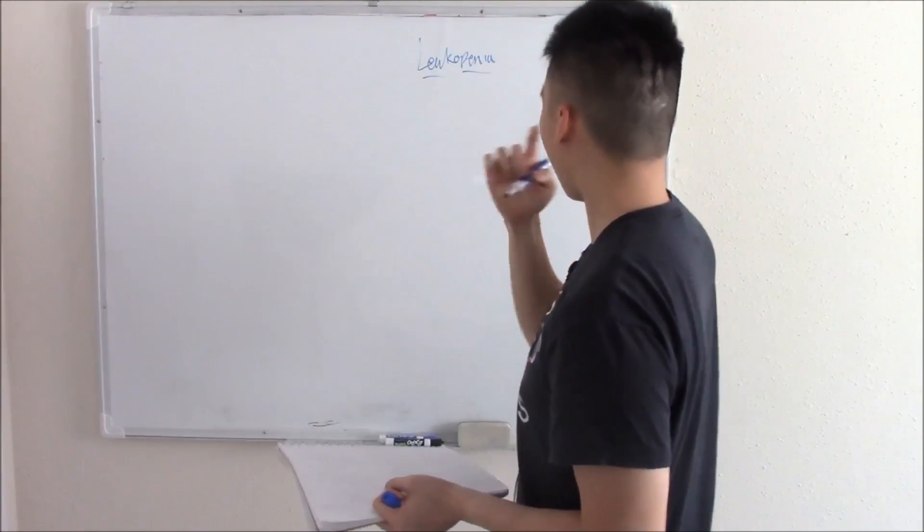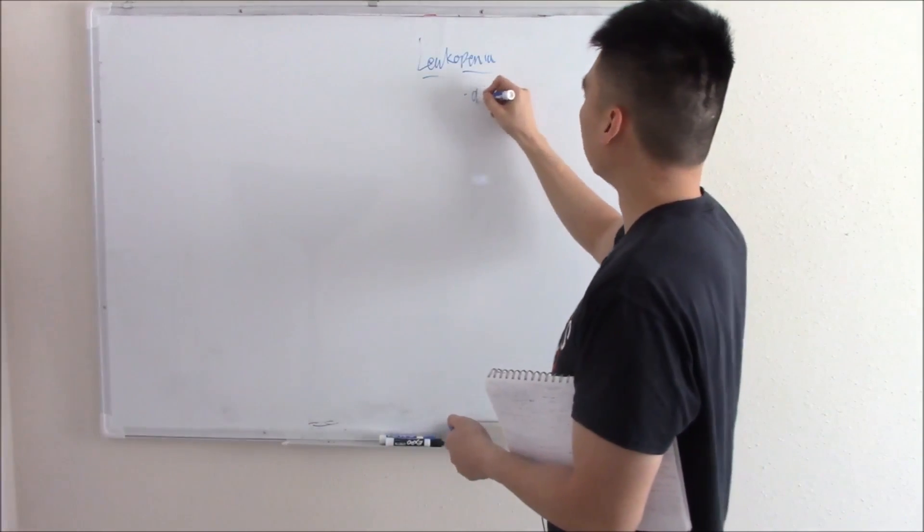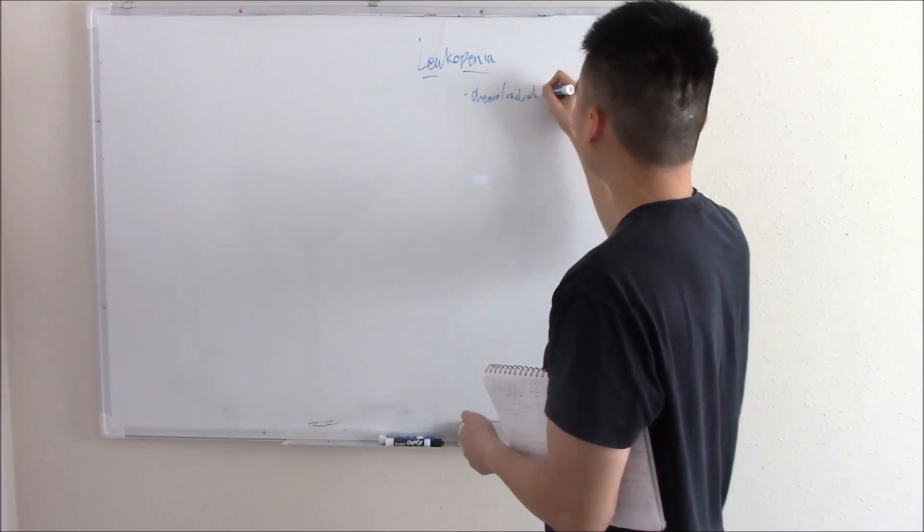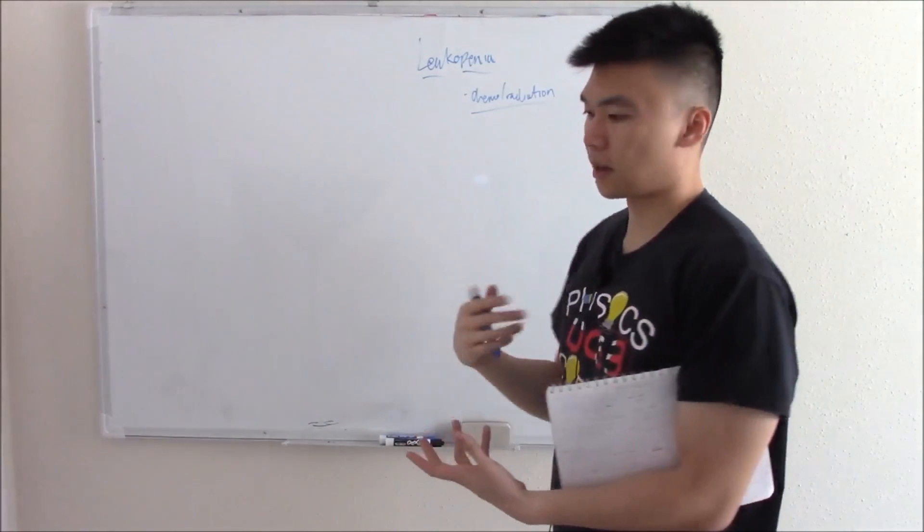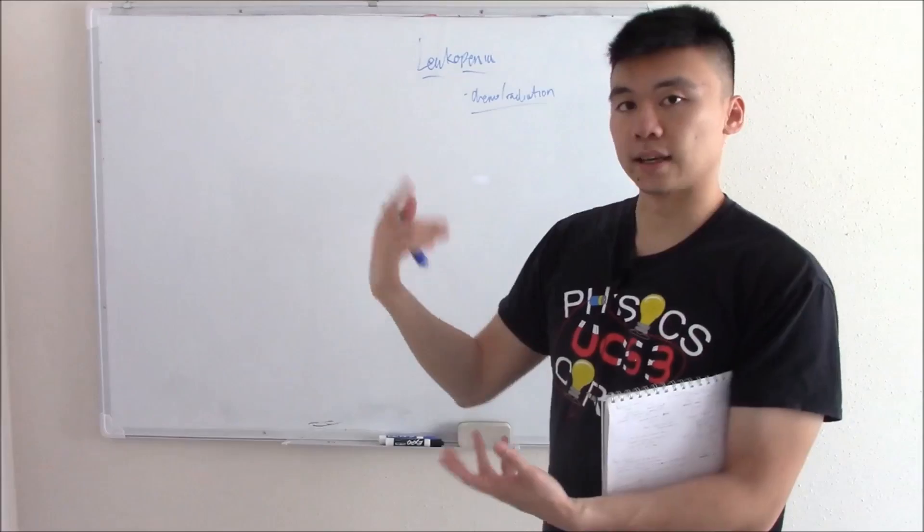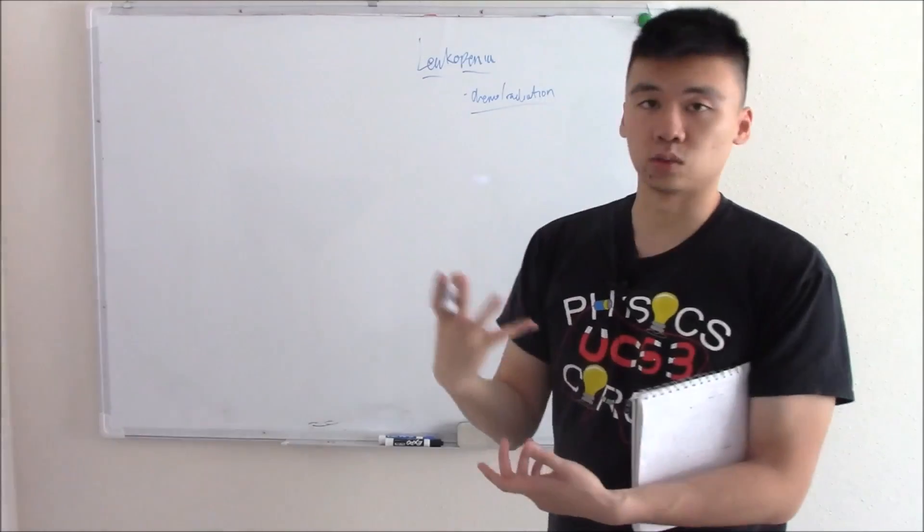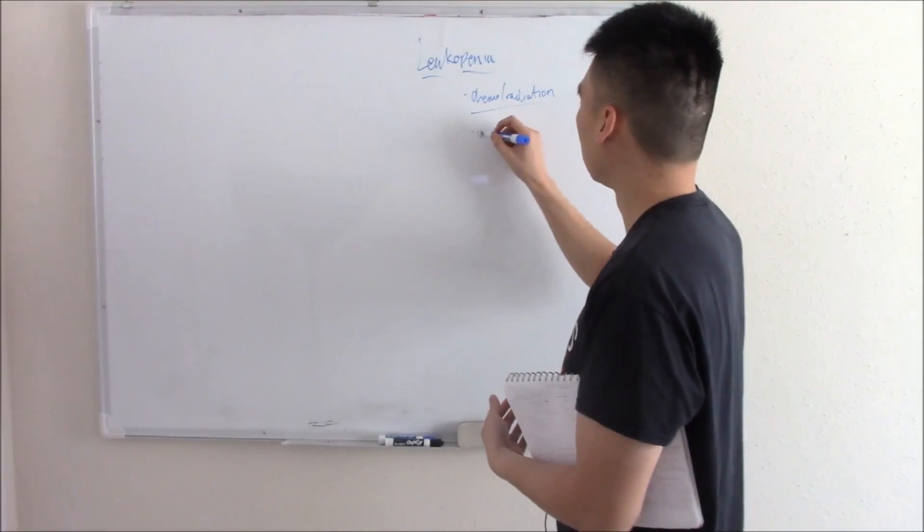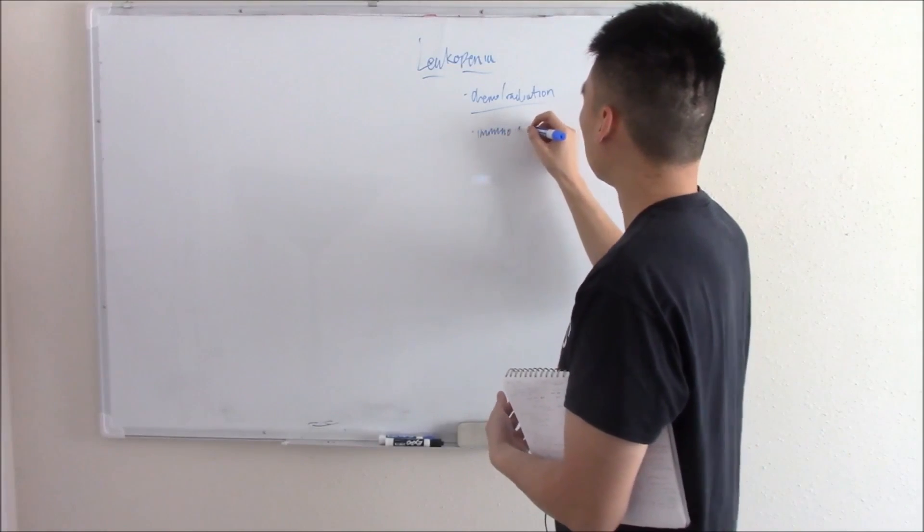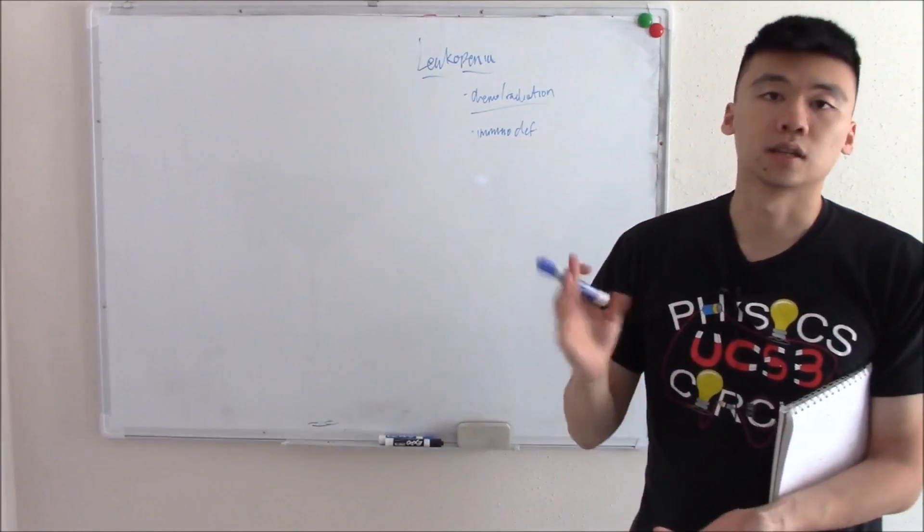Leukopenia means low white blood cells. Common causes include chemo and radiation, which target cells with fast turnover rates like cancer cells, but also unfortunately like your white blood cells. You can also have decreased white blood cells if you're immunodeficient or immunocompromised, like SCID, HIV, or if you're taking certain drugs.